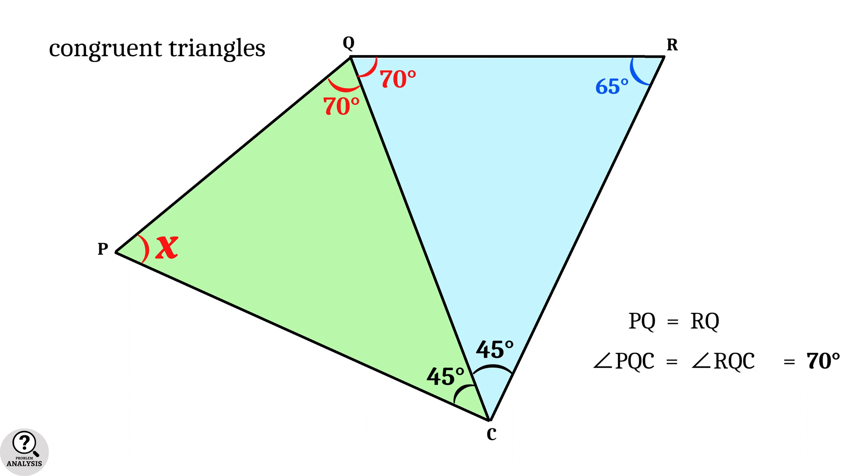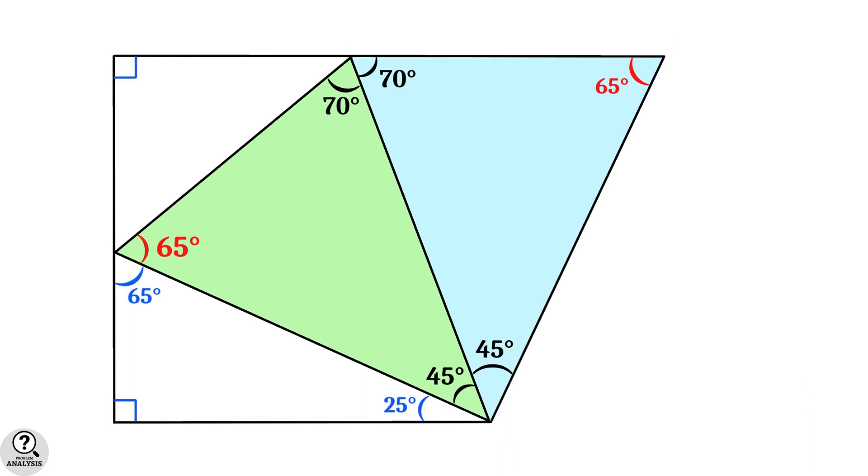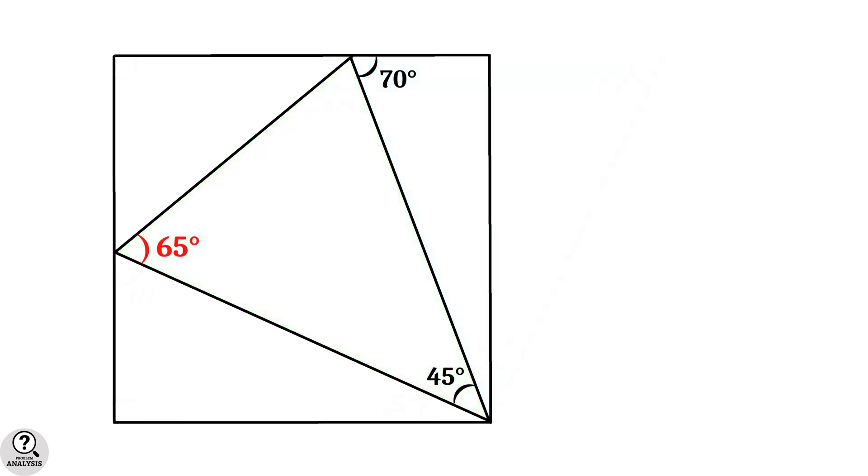Also, angle CPQ and angle CRQ are equal which is equal to 65 degrees. But the angle CPQ was the angle we wanted to find. So, in the diagram of our problem, the red marked angle is equal to 65 degrees. And that is the solution we are looking for.